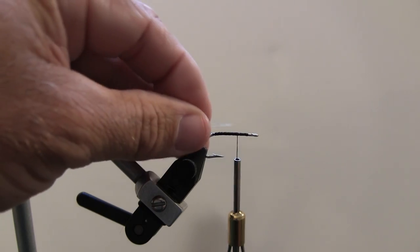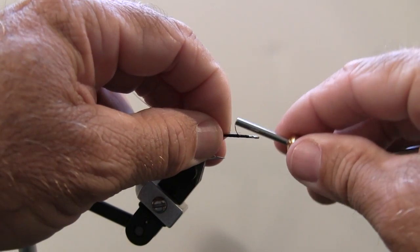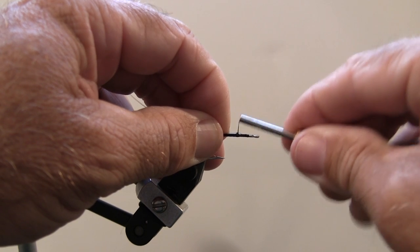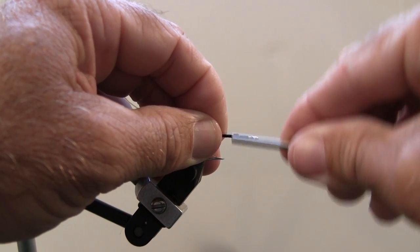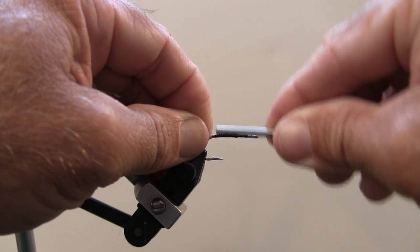I'm going to take my piece of monofilament or fluorocarbon, whatever you have handy. I'm going to lay that along the top of the shank and I'm going to wrap that all the way down even with the barb, making sure I keep it on top.